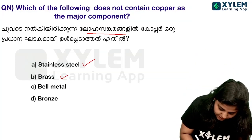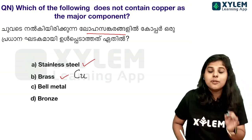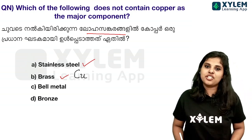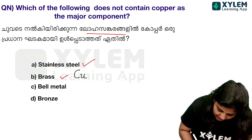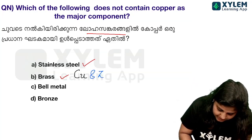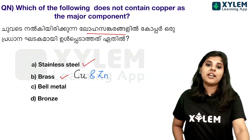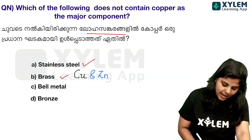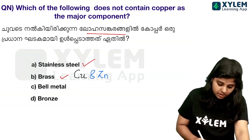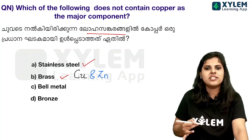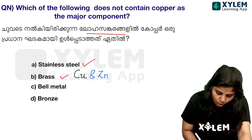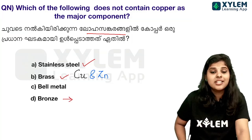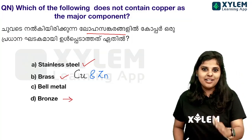Brass: copper is the major constituent, combined with zinc. Bell metal and bronze — bronze is a well-known alloy. In sports medals: gold medal, silver medal, and bronze medal — the bronze medal is made from the bronze alloy.